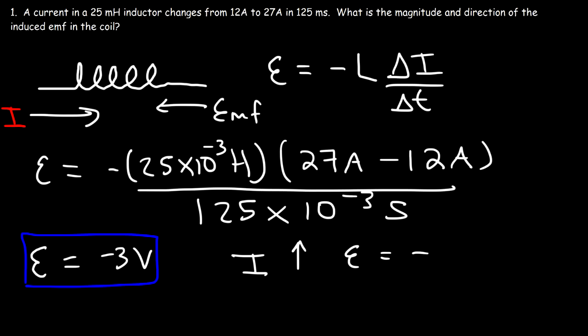Anytime the current increases, the induced EMF will be negative. If the current decreases, the induced EMF will be positive. The inductor works in such a way that it tries to maintain a steady current — if the current increases, it tries to decrease it; if the current decreases, it tries to bring it back up.